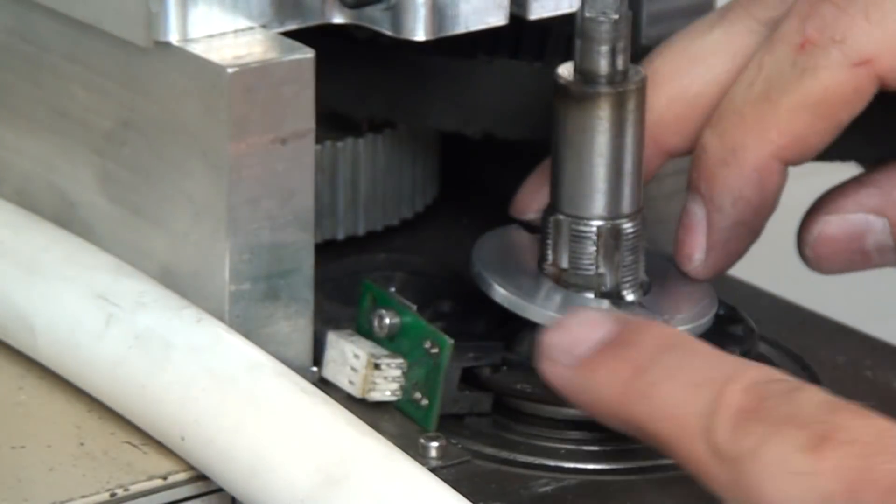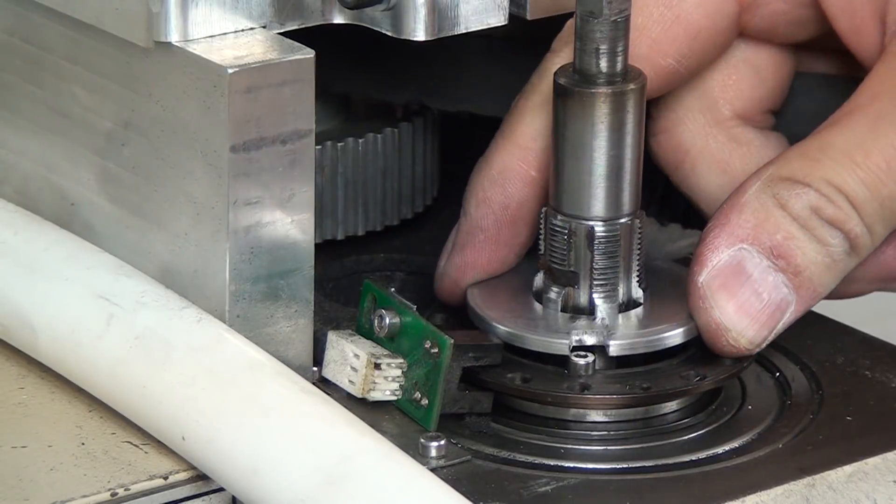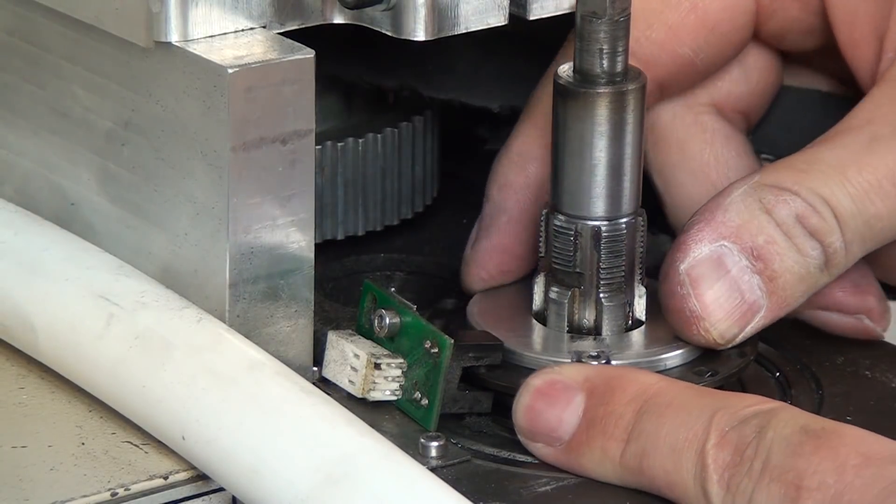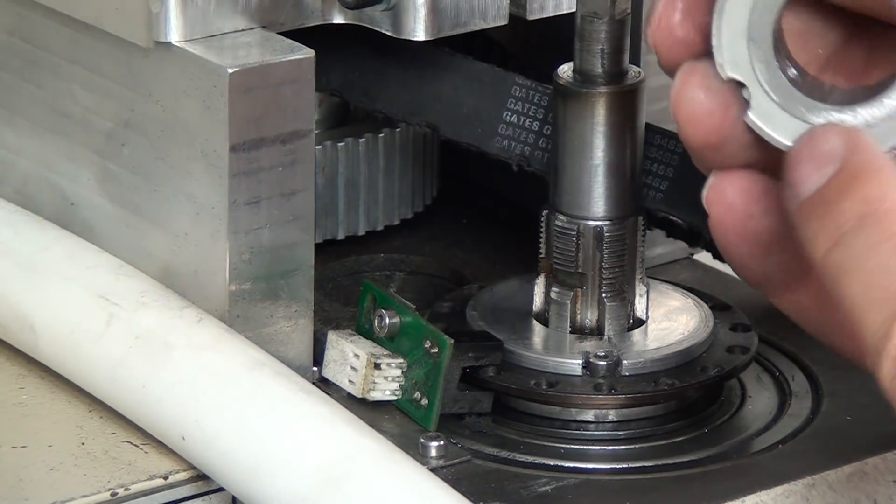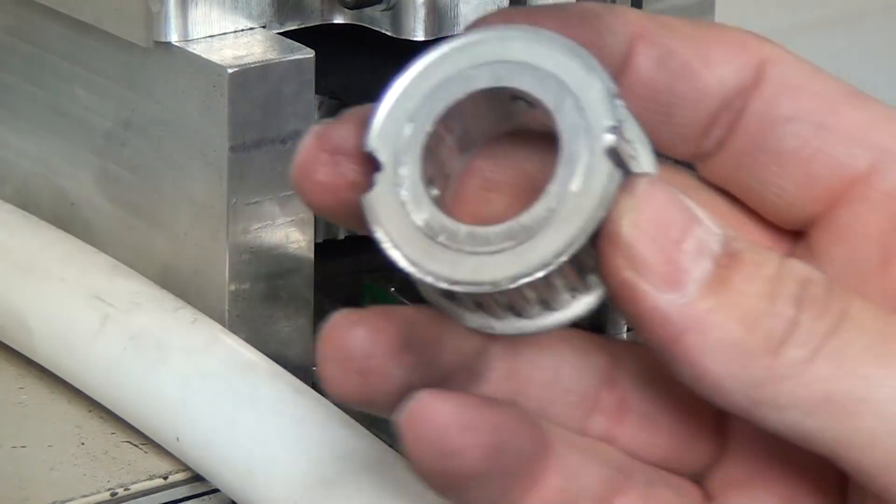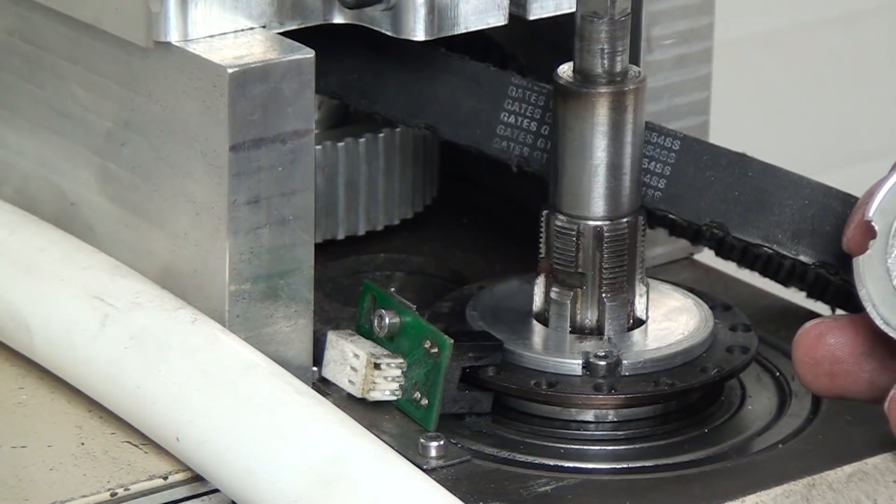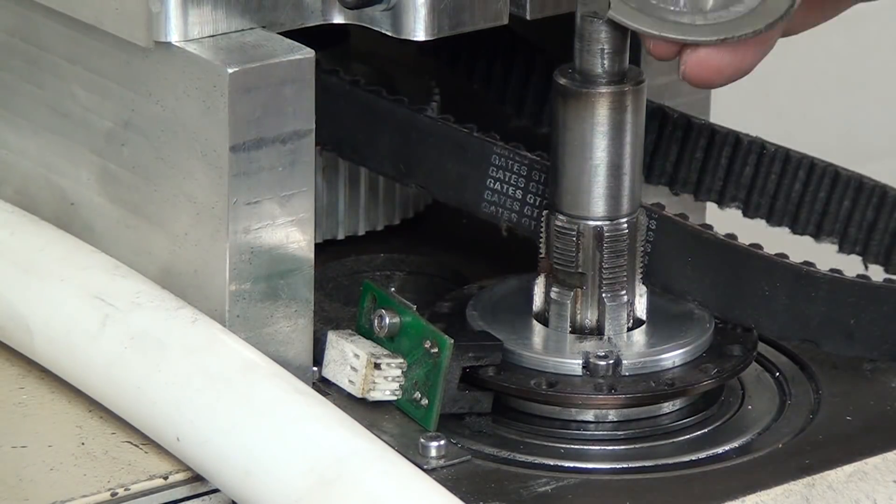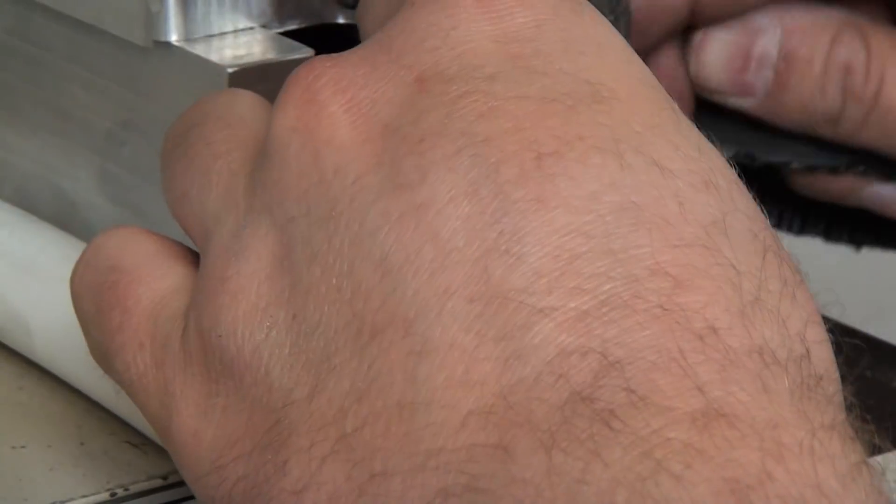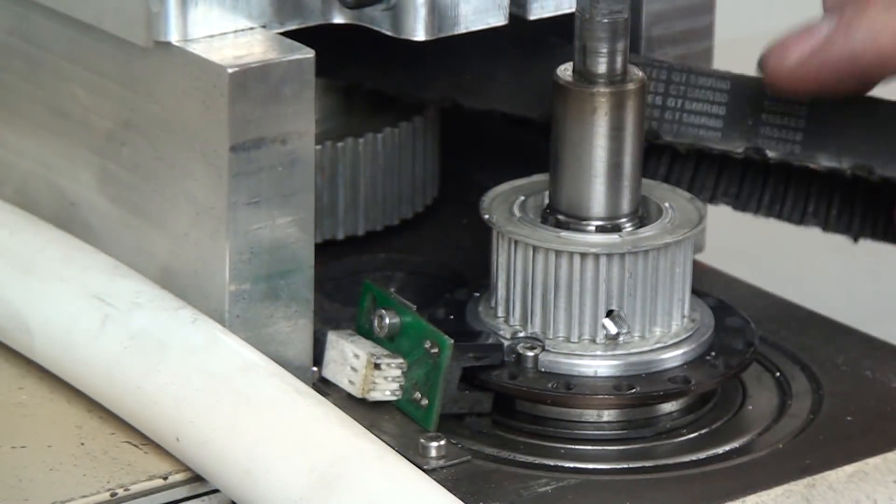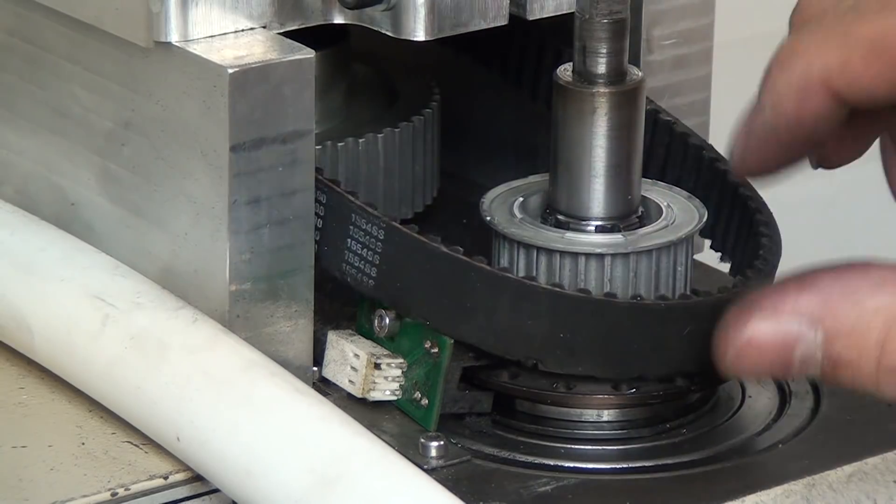And you can see I got a pretty nice fit. It goes on here really snug. It's got to be lined up just right. There we go. Perfect. No wobble at all. And then I had a hub that I had left on the bottom of this pulley and I machined that hub off.